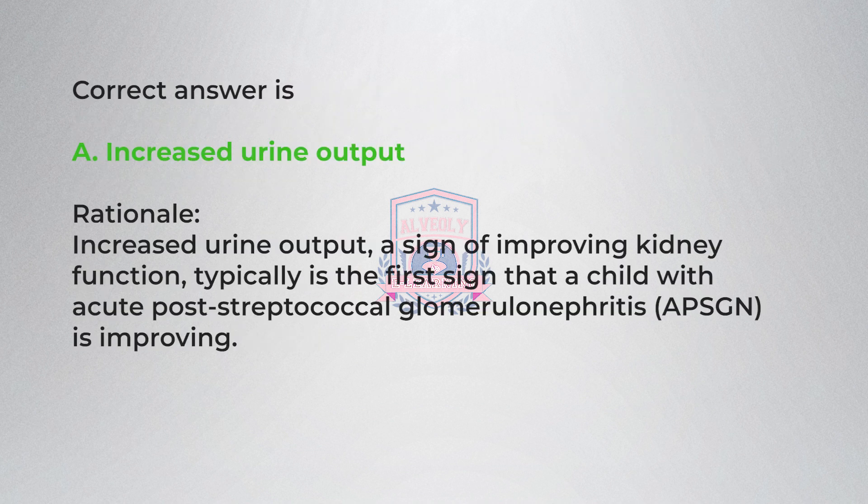Correct answer is A, increased urine output. Rationale: Increased urine output, a sign of improving kidney function, typically is the first sign that a child with acute post-streptococcal glomerulonephritis (APSGN) is improving.